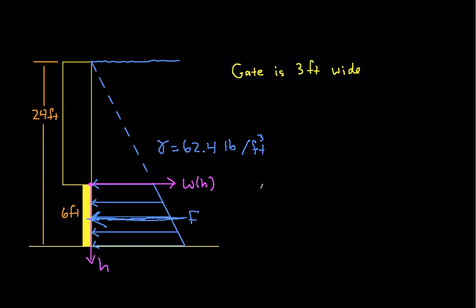So if you look at the situation, W of H is going to be the specific weight of the water, which is 62.4 pounds per cubic foot, times 3 feet, because the gate is 3 feet wide, so we're taking a slice here that's 3 feet wide. And then the distributed force magnitude will be equal to 18 feet, that's the depth of the water when I first start with H equal to 0, plus H.